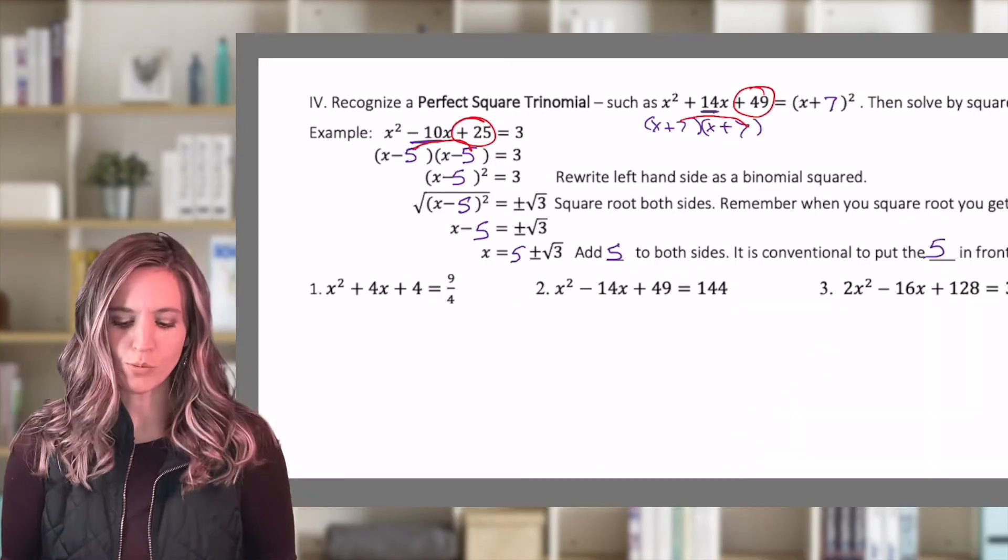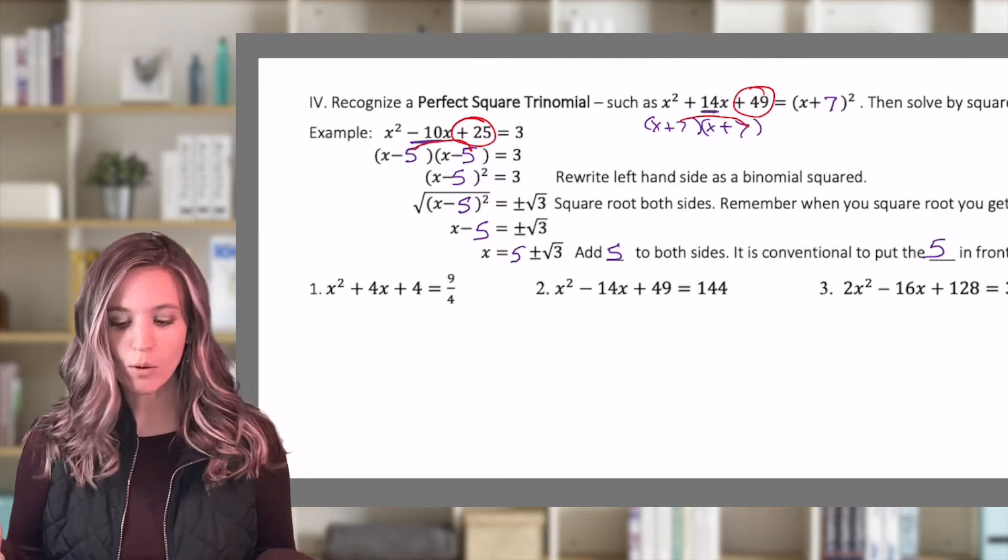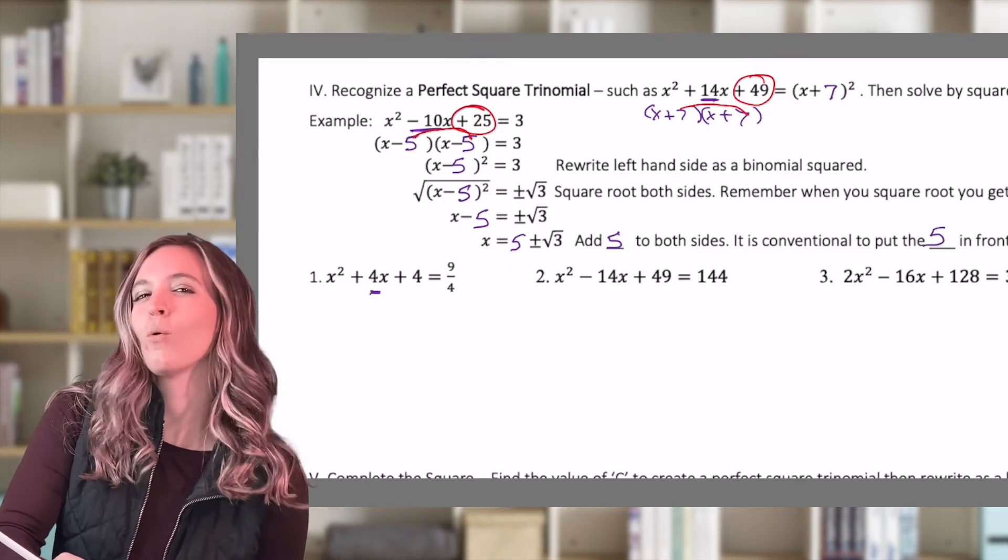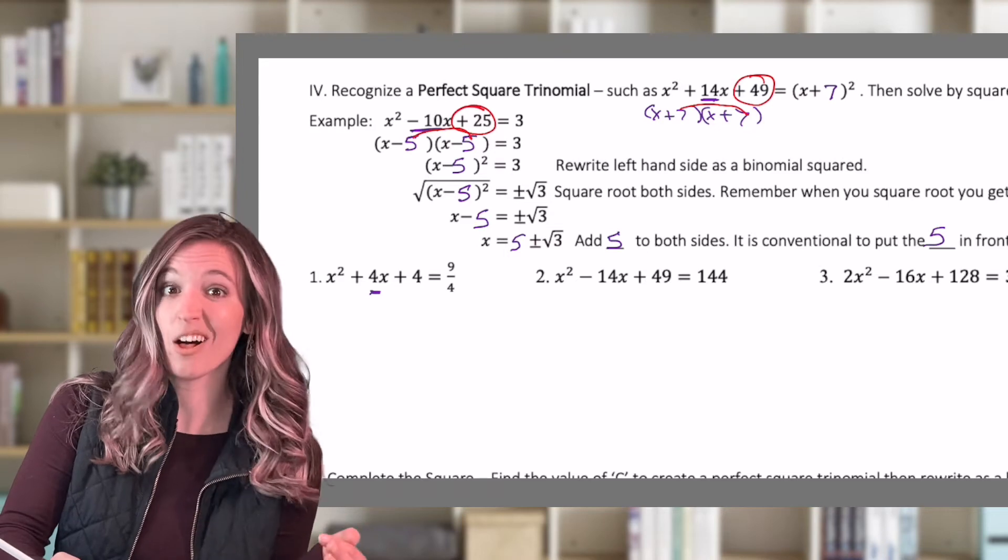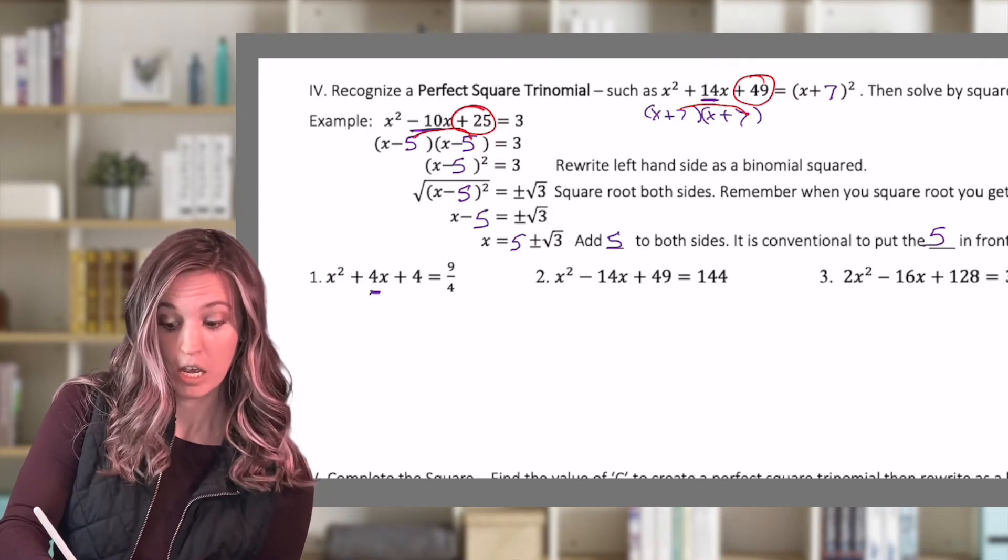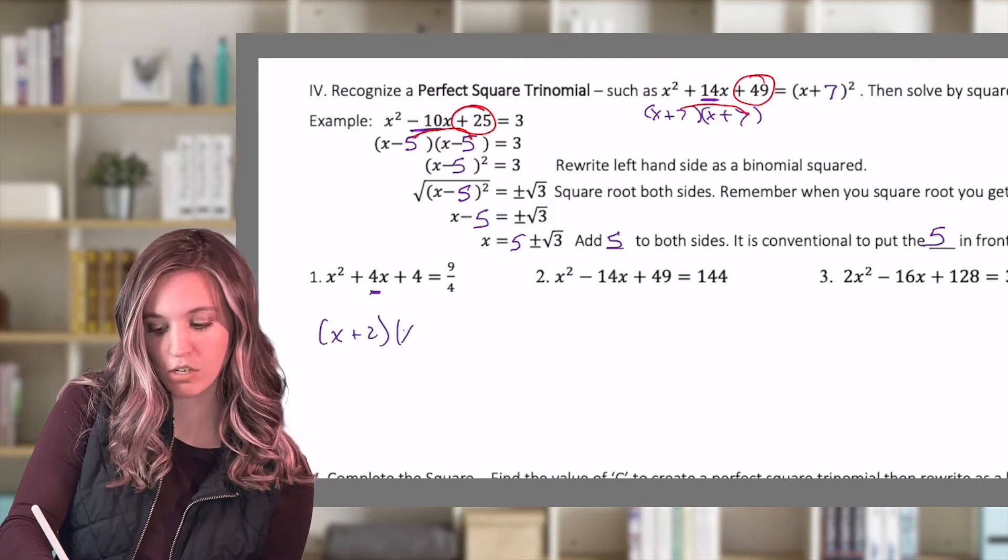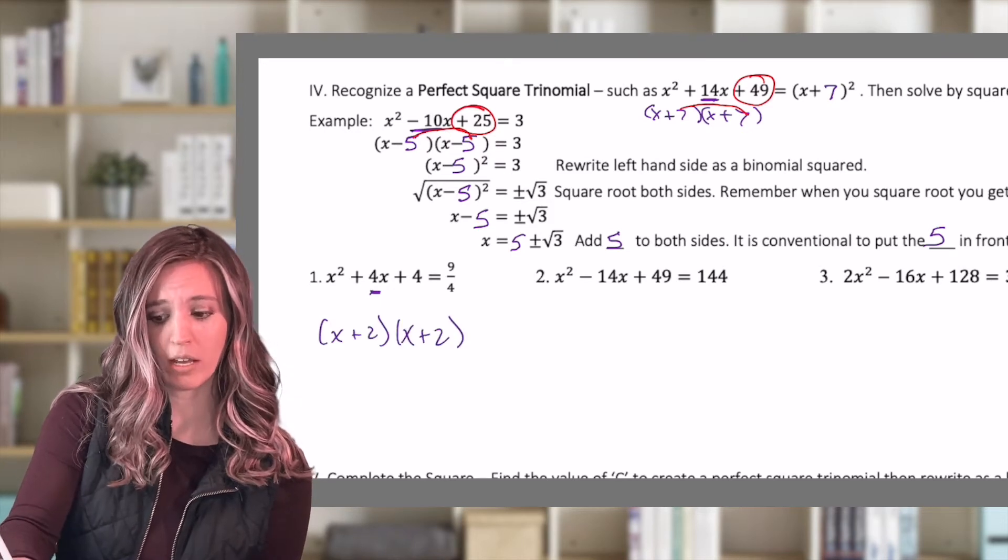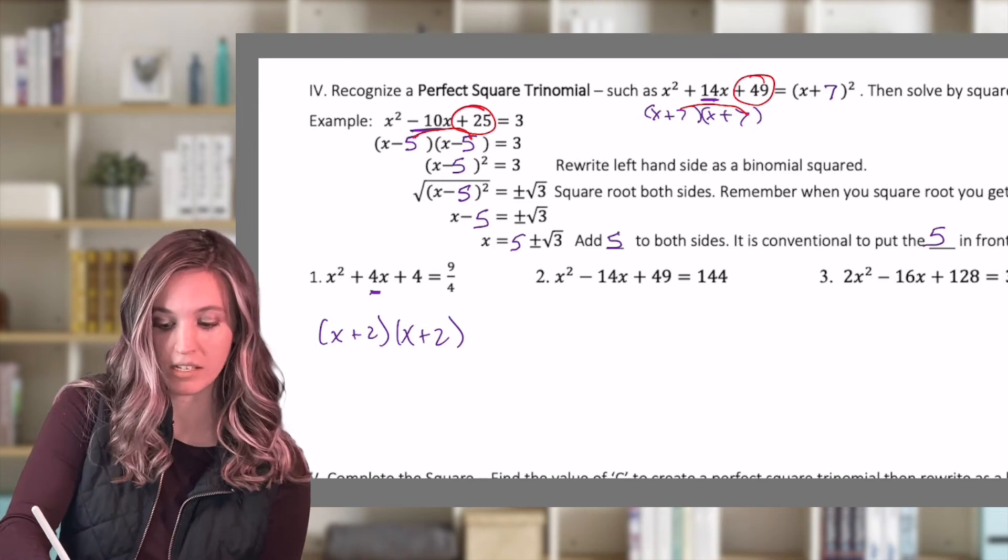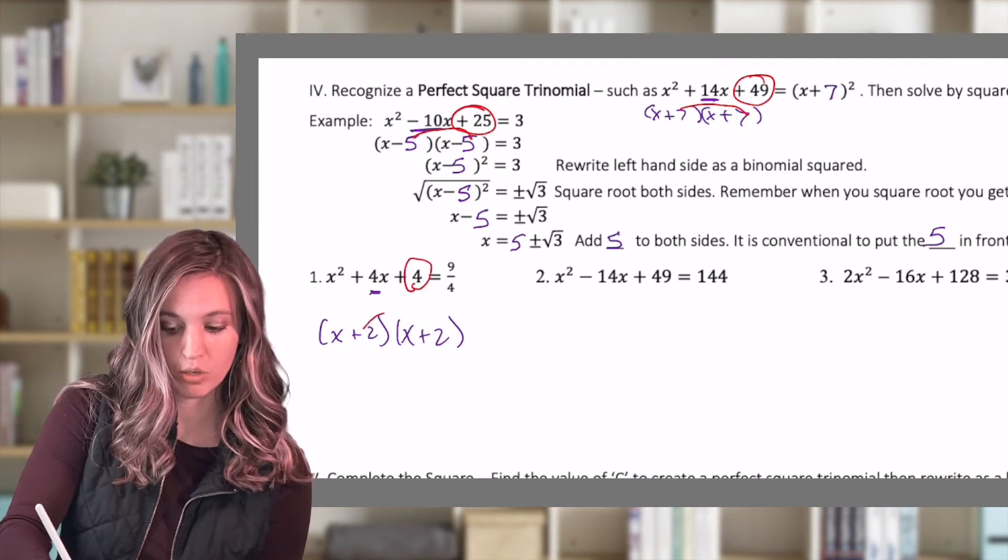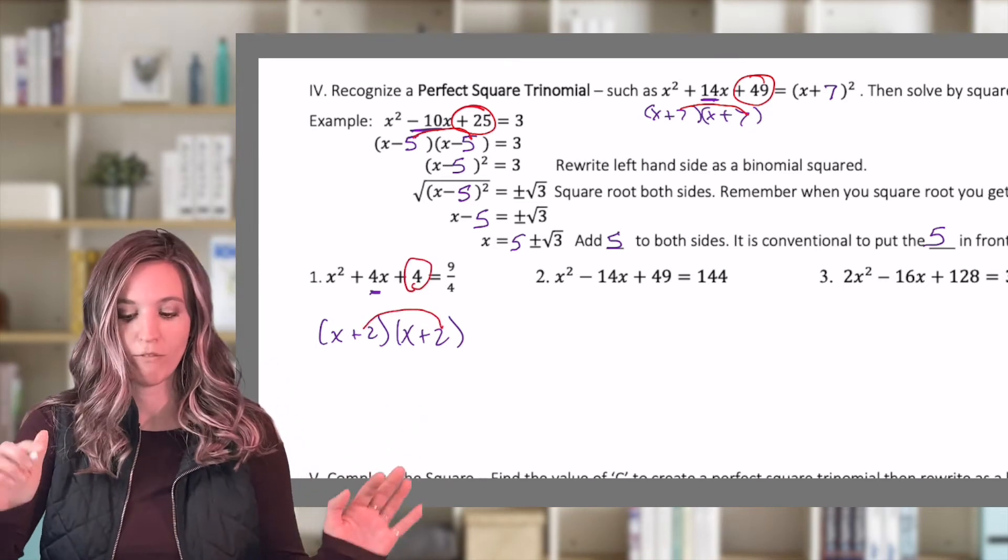So let's keep this up. For this one, I have a perfect square trinomial equals 9 fourths. So I'm going to want a number that added to itself equals four. So what, two and two, x plus two, x plus two, because I want that positive four. And let's check and make sure that that multiplies to this four out here. Two times two, yep, it's going to multiply to that four.